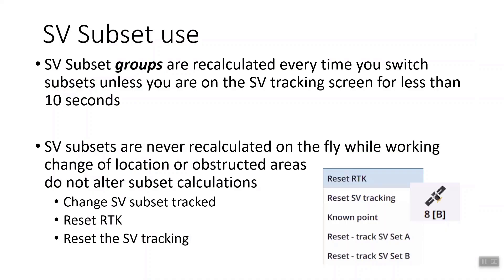A couple of things I found interesting: the group subsets are recalculated every time you switch. So if you go to the sky plot screen and hit switch to A, it'll do a recalculation and pick the best constellation, but it doesn't recalculate on the fly. So if you leave it on set A and drive a mile down the road, you're still tracking the best set from back where you were. Be careful that you don't forget it's on, as it limits what you're tracking. Same with obstructions — if you're using a subset of satellites and you walk under a tree and lose four satellites, you only had eight to start with, so now you only have four. It will not automatically recalculate the best split of A's and B's.